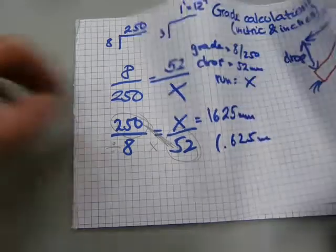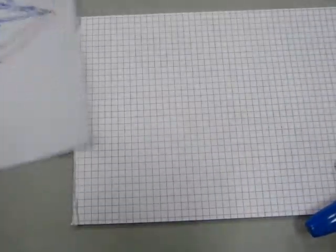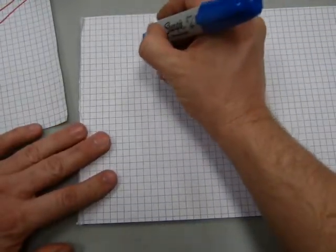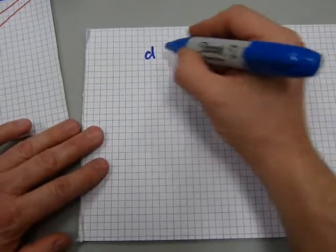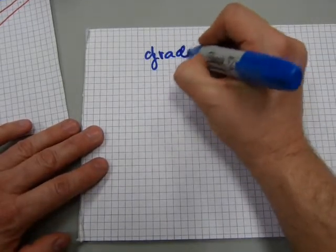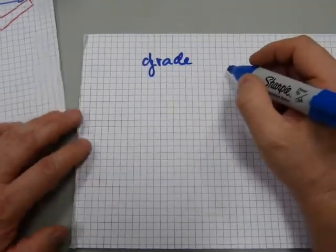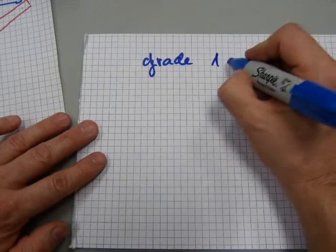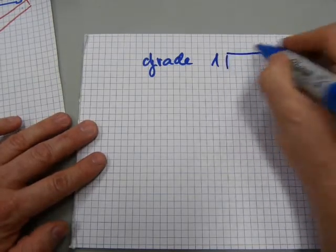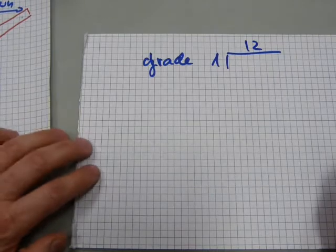I'll show you how it works in inches. Very similar, same idea. We have grade given as, say, 1 in 12, something like that.